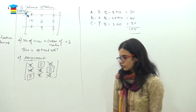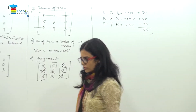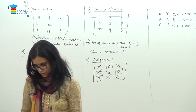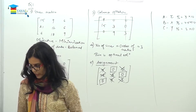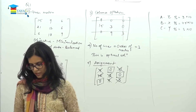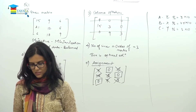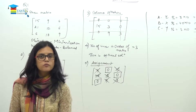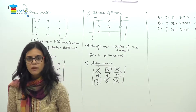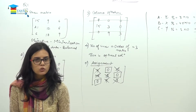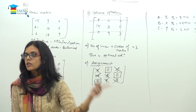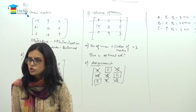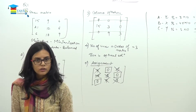That's all for today. Question number 2 is your homework. In question 2, note carefully — it is a sales matrix, i.e., a revenue matrix. The objective is maximization — to maximize revenue. So you will need to convert it into an opportunity loss matrix.